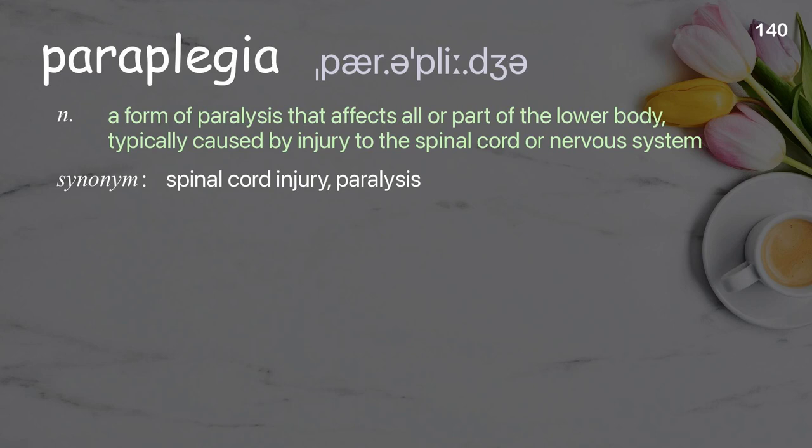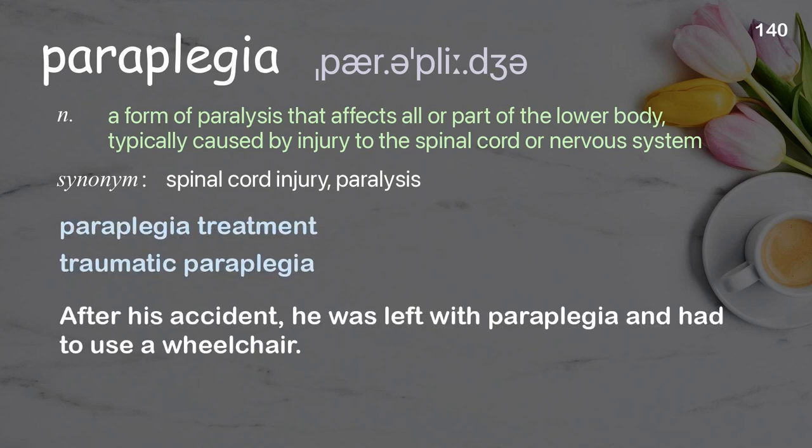Paraplegia: a form of paralysis that affects all or part of the lower body, typically caused by injury to the spinal cord or nervous system. Examples: paraplegia treatment; traumatic paraplegia. After his accident, he was left with paraplegia and had to use a wheelchair.